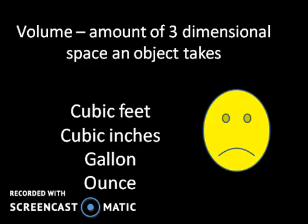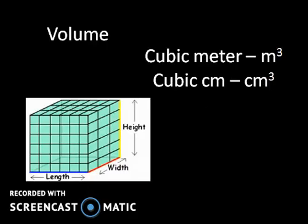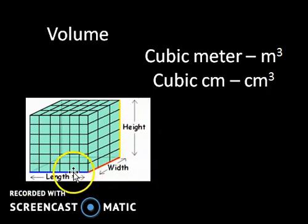The next is volume. Volume is very similar, except it is the amount of space that a three-dimensional object takes. In everyday language we might be talking about cubic feet, cubic inches, gallons, or even ounces. But in science class, we're going to be talking in terms of cubic meters and cubic centimeters. Here's an example — you have this shape here, and it's length times width times height. You multiply those three and you get a cubic centimeter, so this might be 100 cubic centimeters.